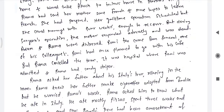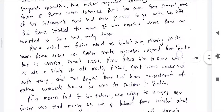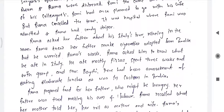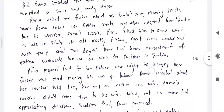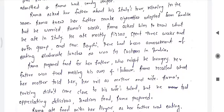Adam and Ruma were very much distressed. Romi too came from New Zealand for the funeral with one of his contacts. Roma asked her father about his Italy stay, relaxing in the room. She knew her father smoked cigarettes, a habit adopted from India, but he was worried. She asked him what he ate in Italy — he ate mostly pizzas and spent three weeks with the group and Mrs. Bakshi. There had been amazement at eating elaborate lunches, as was the custom in India.